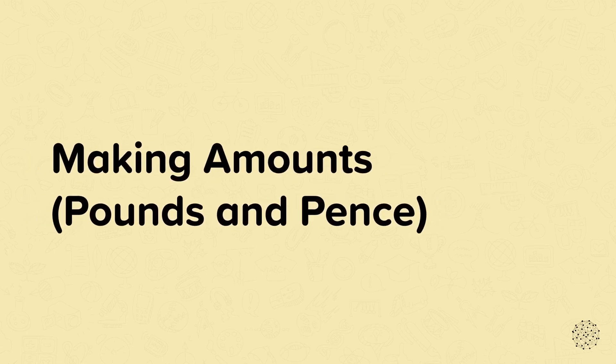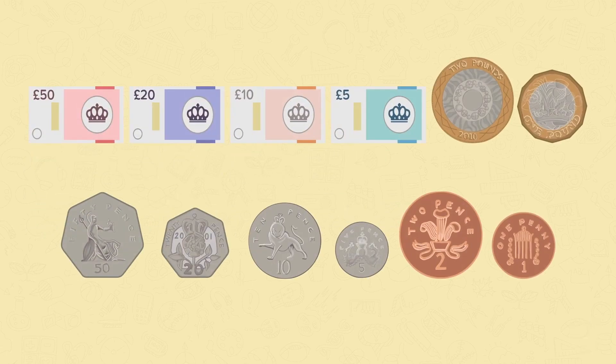Making amounts, pounds and pence. Here are some notes and coins. They've been arranged from the note with the largest value to the coin with the smallest value.